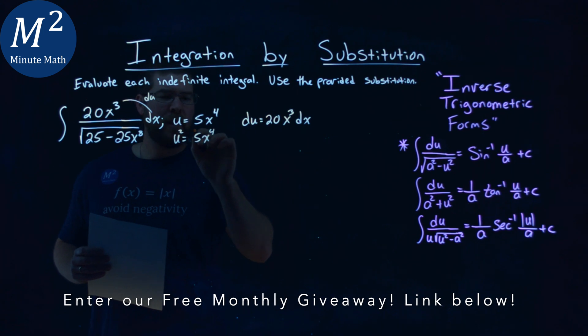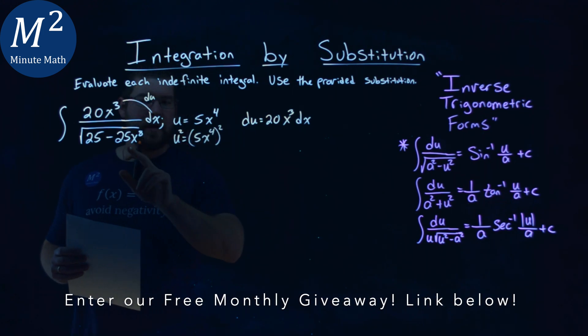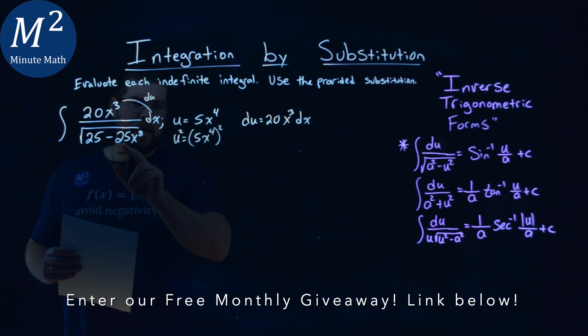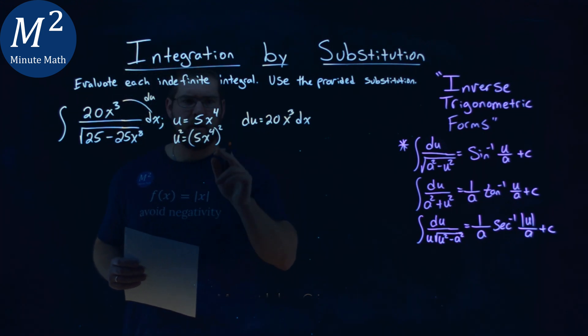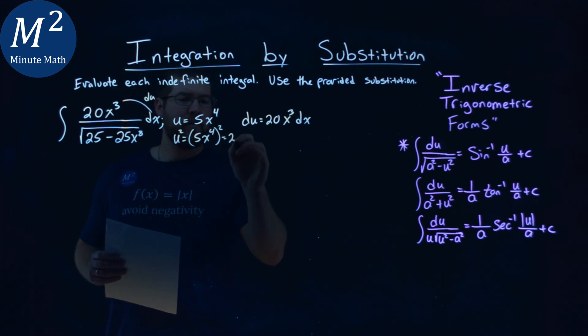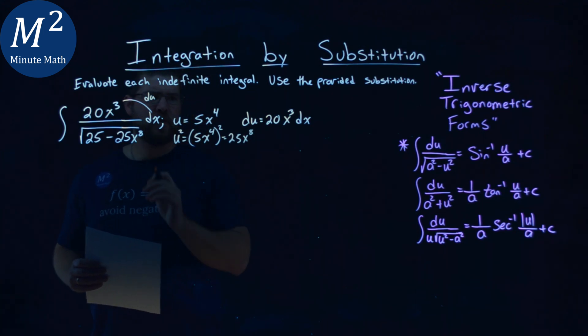Well, 5x⁴ all squared, and notice we actually have that right here, that 25x⁸, right? We square that, it turns out to be that 25x⁸. Looks pretty good.